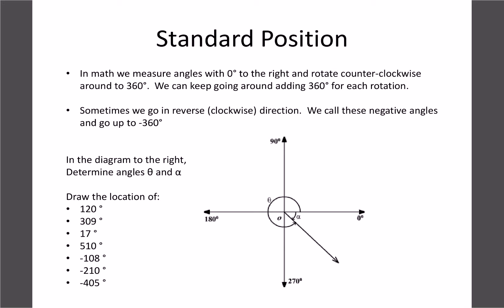So if we're trying to locate an angle like 310 degrees, we'd go to 90, to 180, to 270, and then 40 degrees past that to get to 310 degrees. We could also go in the negative direction — instead of going around 310, we could go backwards 50 degrees. So negative 50 degrees would also give us the same location. Most often we do positive, but negatives do occur.